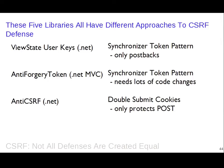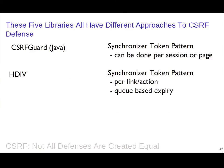Summary of the five libraries: ViewState user keys (.NET) — synchronizer token pattern, only postbacks; anti-forgery token (.NET MVC) — synchronizer token pattern, requires code changes on every page; anti-CSRF (open source .NET) — double submit cookie pattern, only POST; CSRF Guard (Java/OWASP) — synchronizer token, per-session or per-page; HDIV (Java) — synchronizer token, unique per link/action with queue-based expiry. HDIV is implemented as a library you import into your project, not a filter.